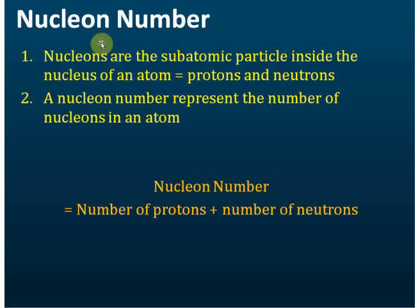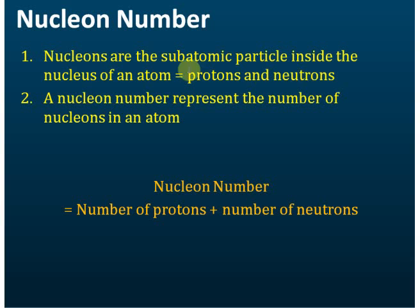So what is nucleon number? Nucleons are the subatomic particles inside the nucleus of an atom. There are two types of subatomic particles inside the nucleus — namely protons and neutrons. Therefore, both protons and neutrons are called nucleons.